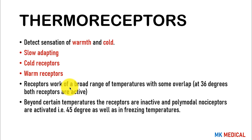Thermal receptors detect warmth and cold. They are slowly adapting and come in two types: cold receptors and warm receptors. Both work across a broad overlapping temperature range; at around 36°C, both are active. Beyond certain temperatures, most receptors become inactivated and a special receptor — the polymodal nociceptor — is activated, responding to temperatures above 45°C and freezing temperatures, causing pain.